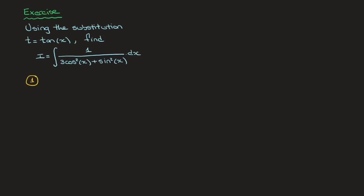Just as we saw in the previous examples, to write cosine squared of x and sine squared of x in terms of t, we can use right angle trigonometry. We can draw a right angle triangle with our right angle here, and call this interior angle x. Keeping in mind that the substitution is t equals tan of x, we need the tan of x to equal t in this triangle. The easiest way to do that is to call the side length opposite x as t, and let the side length adjacent to it equal 1.